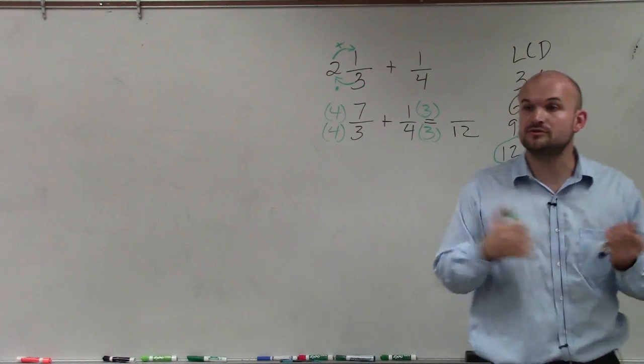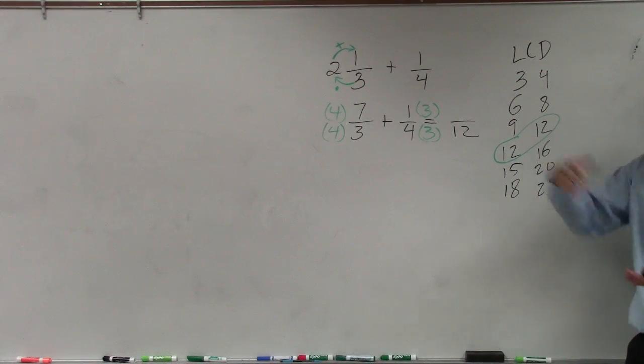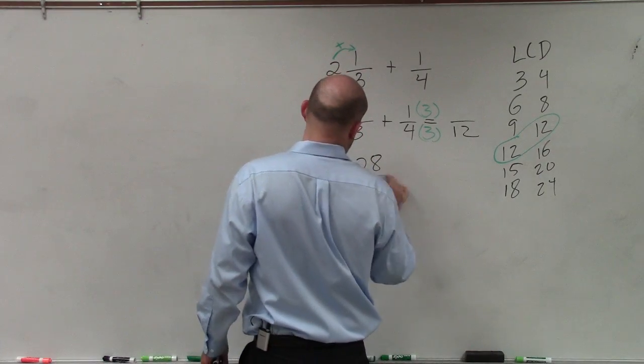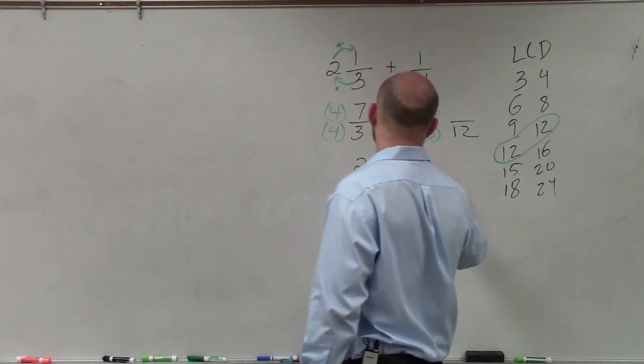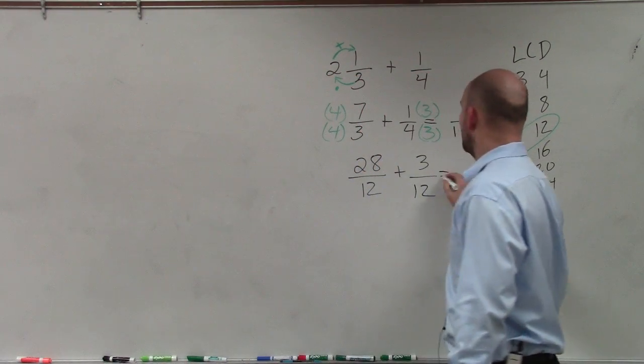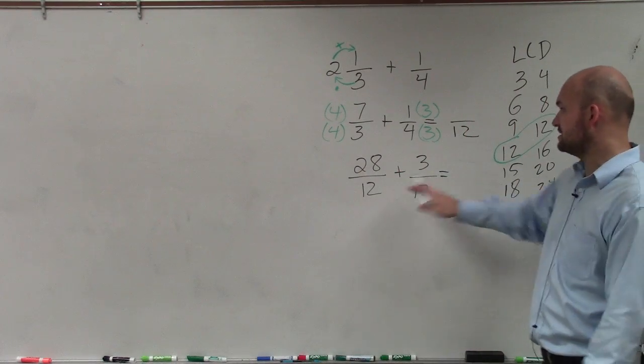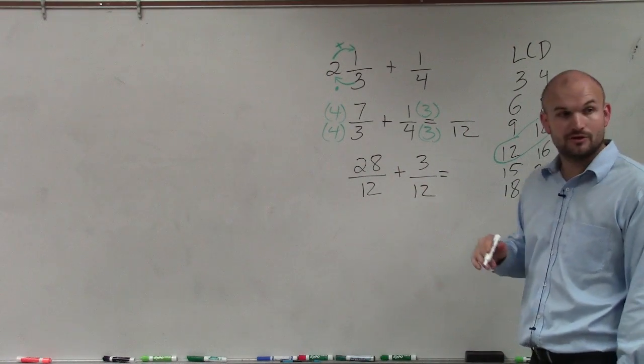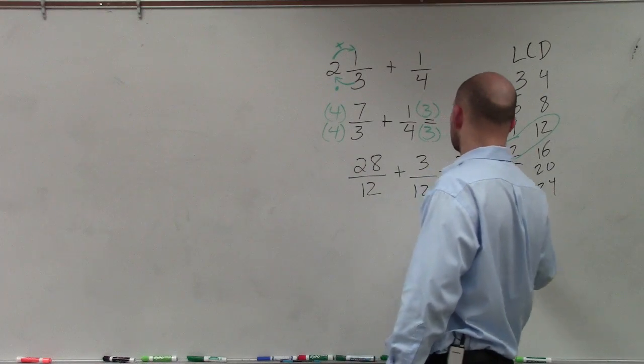And then, as we go through, just like we multiply fractions, we multiply straight across. So therefore, I have 28 over 12 plus 3 over 12. Add those up, 28 plus 3. Since they have the same denominator, I can now combine their numerators, 28 plus 3 is 31 over 12.